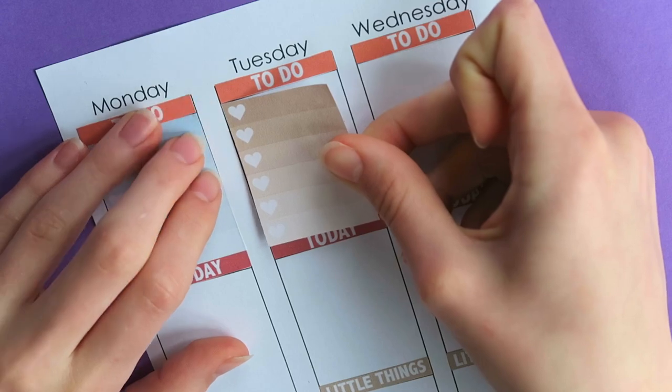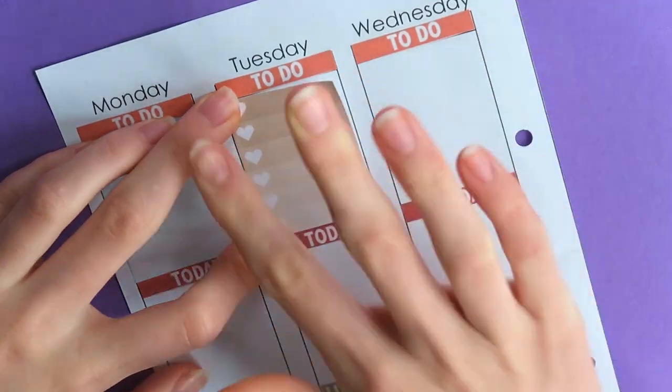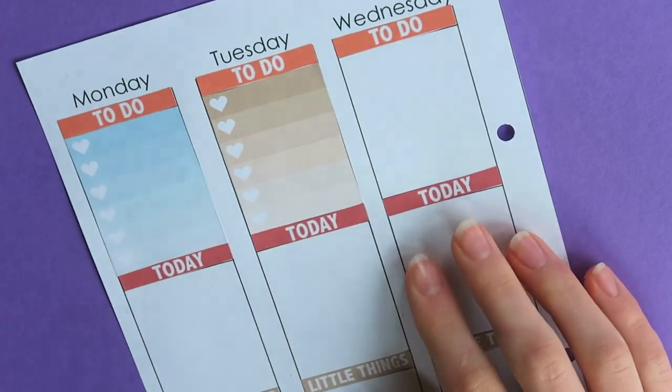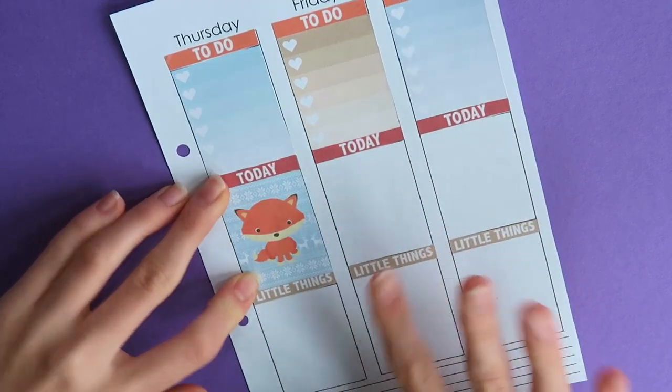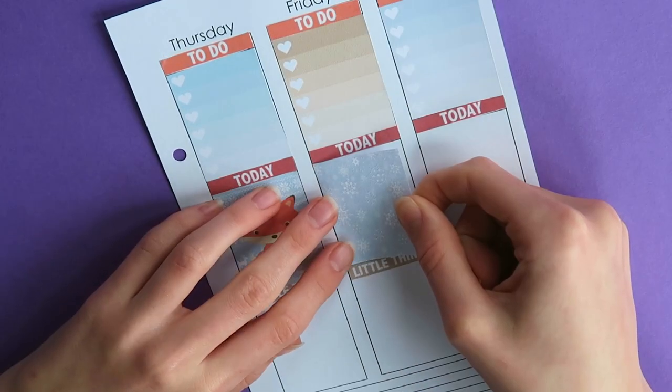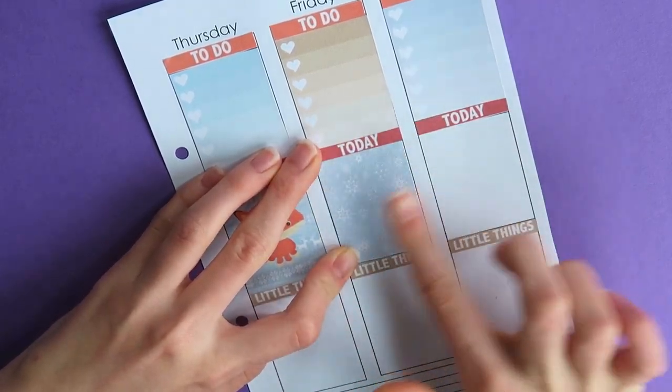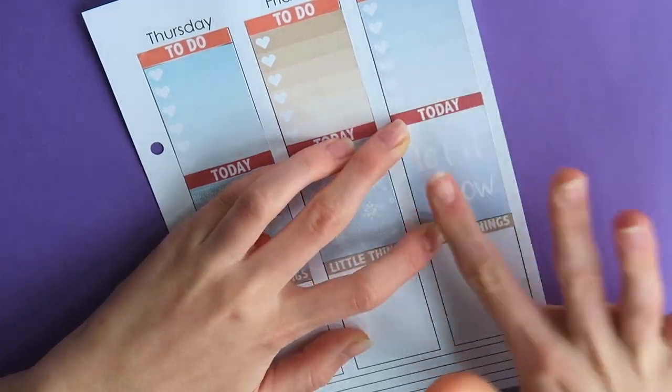Then I add the today row and the little things. Then all the way on the top I added these heart checklist box thingies. I really love using those because I always make checklists every day. And then I added some decorative picture thingies for the today box. I like doing that just as decoration.